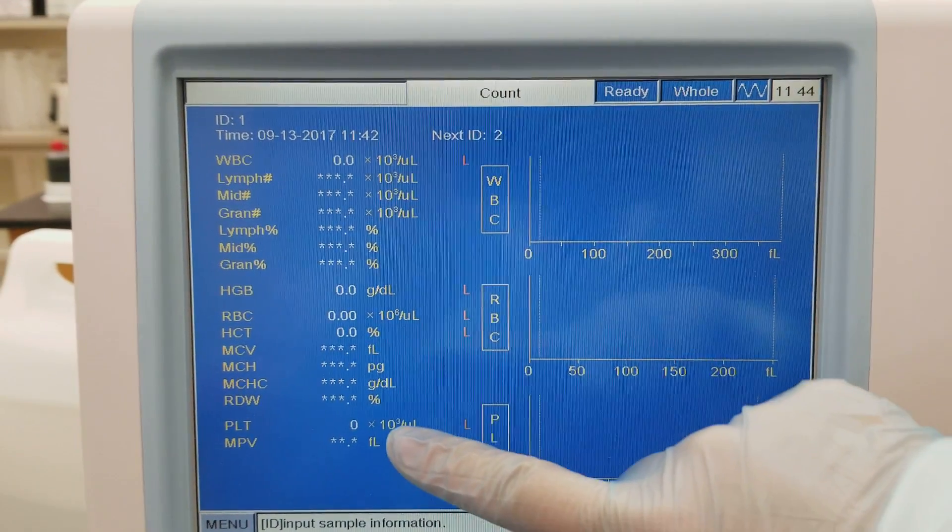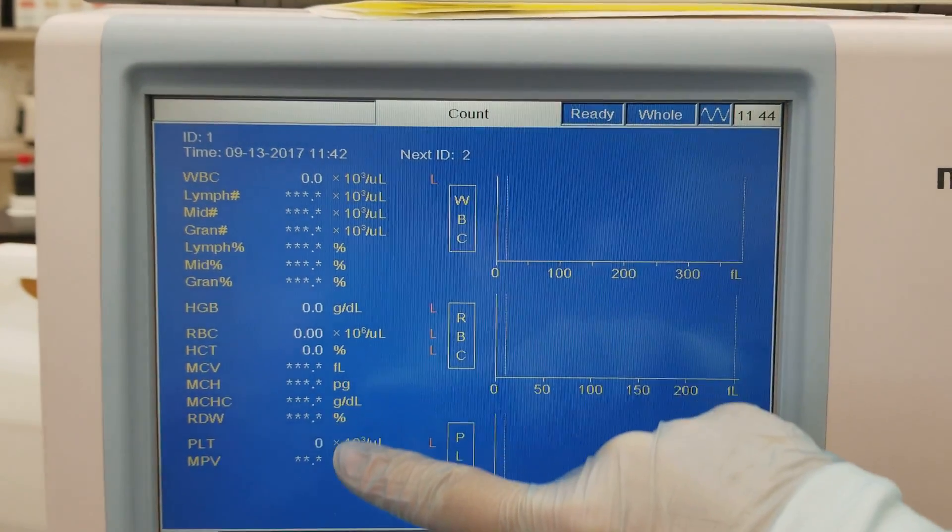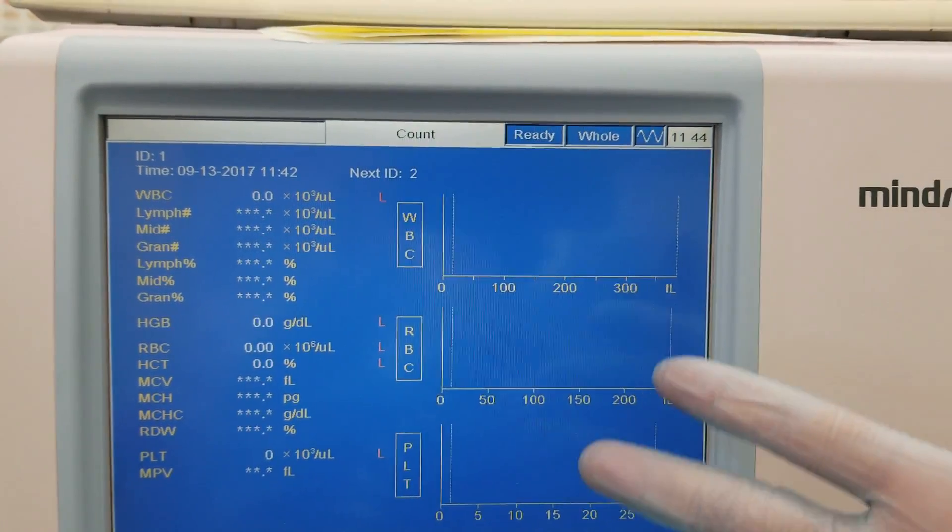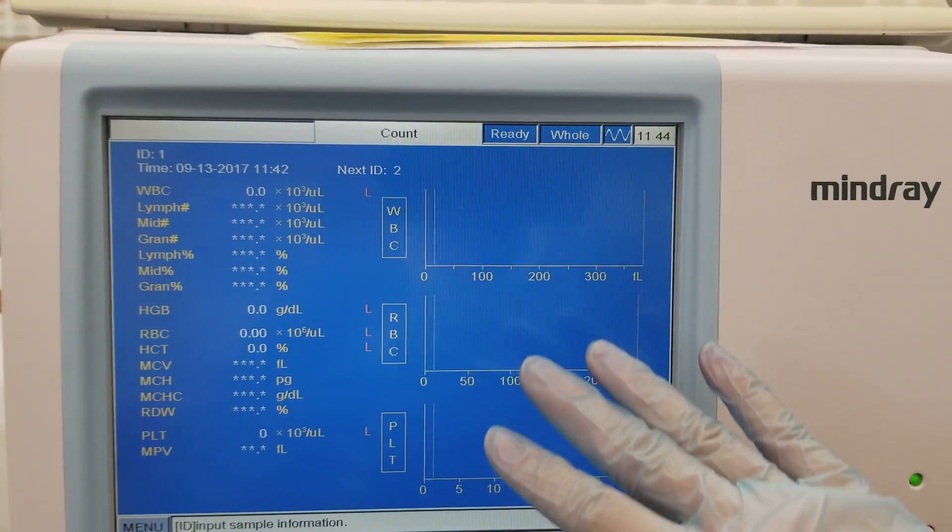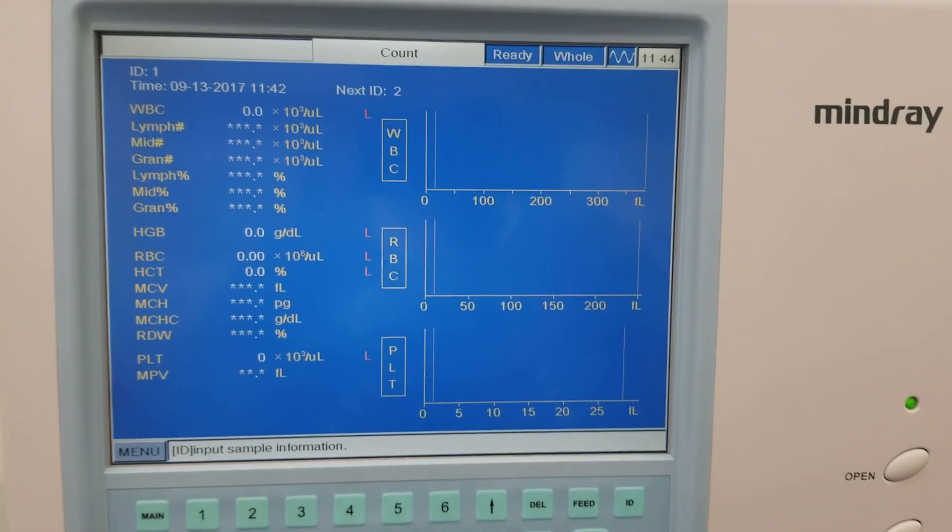It's working great because everything is zeroed here. The instrument does flag that as low, which is wonderful. There's nothing in the histogram windows, so that means everything is ready to go.